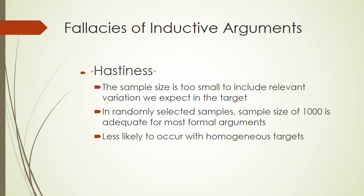The last fallacy we need to worry about in this presentation is hastiness. A generalization suffers from hastiness when the sample size is too small. Remember that the larger the sample — the more members we include — the more variation we expect to see in that sample. So a small sample size might mean that we have failed to include important, relevant variation. In other words, smaller sample sizes fail to achieve the representativeness required for heterogeneous target populations.